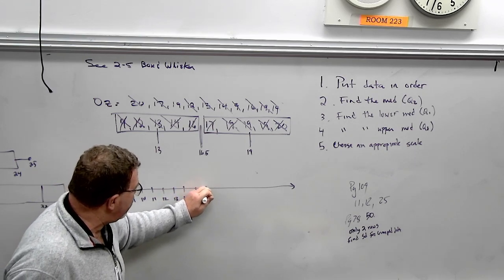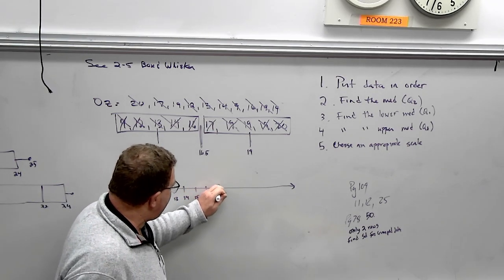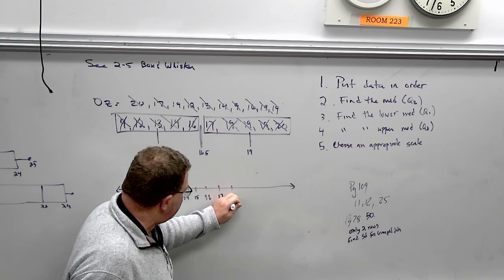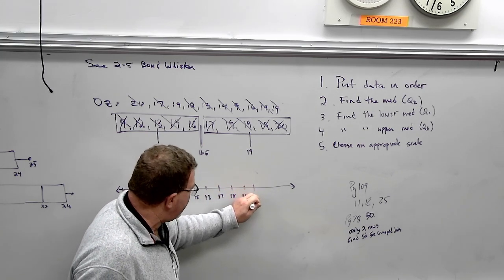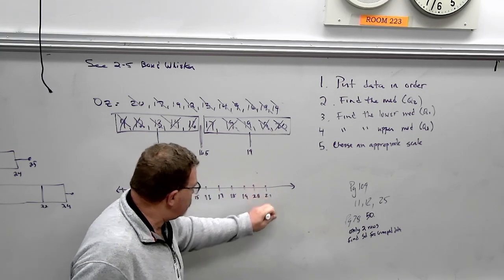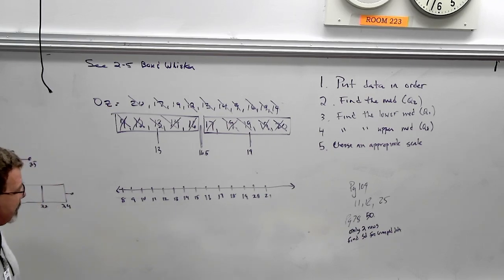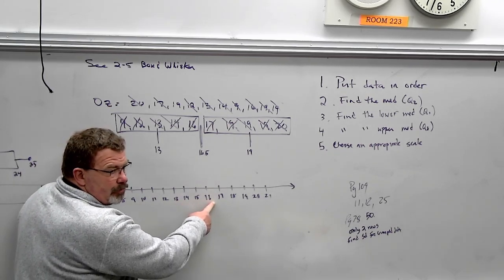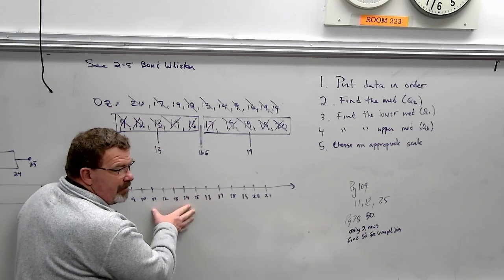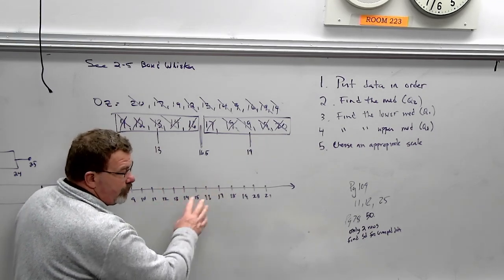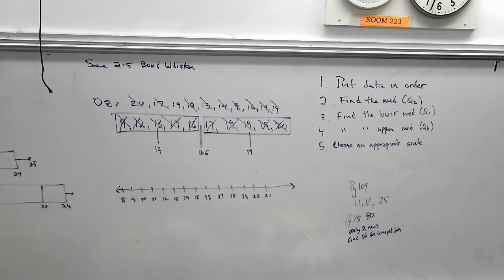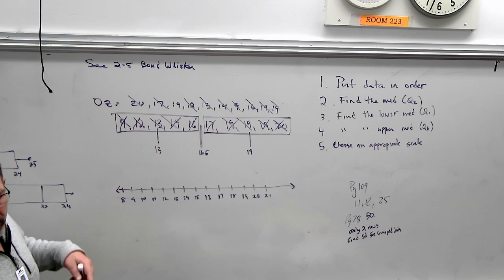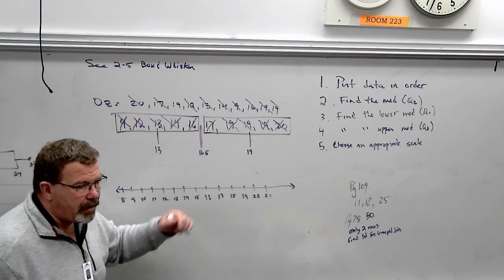Just label your scale. Use the same scale. I had somebody last hour do this. Let me finish this. A person last hour went like 8, 9, 10, 11, 12, and then they changed it by twos. Don't do that. You've got to be consistent. It's all ones or all twos. Don't change it right in the middle. Okay. So all I did is I labeled it from nine. I went from, I always go one below and one above, 8 to 21.